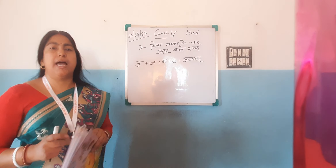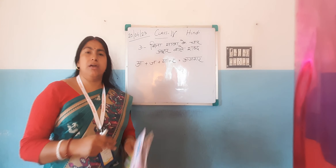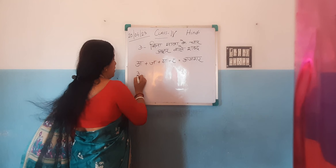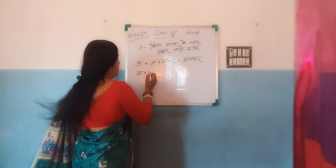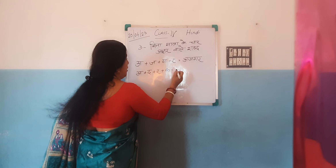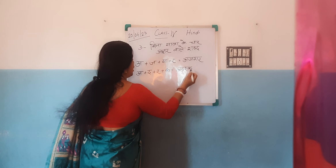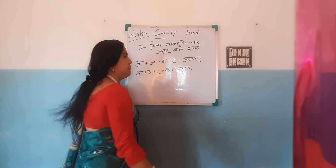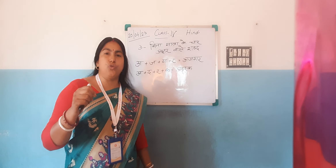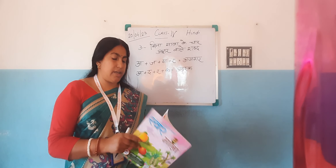Ajigar means a large snake. Okay, and the next picture is Adarak. Again: A, Da, Ra, Ka — Adarak. Adarak means ginger. It is used as a spice to cook food.